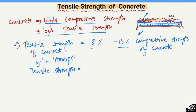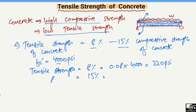The tensile strength is either 8% or a maximum of 15% of the compressive strength. So 8% means 0.08 multiplied by 4000, which comes out to be 320 psi. And 15% means 0.15 multiplied by 4000, which gives 600 psi. So this is the range of the tensile strength of the concrete.